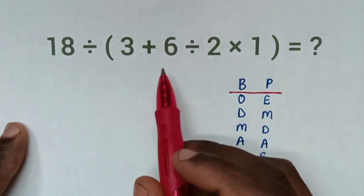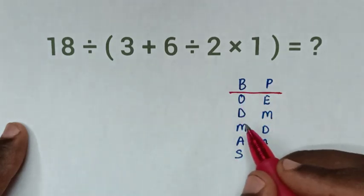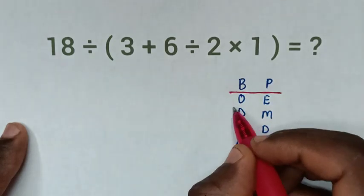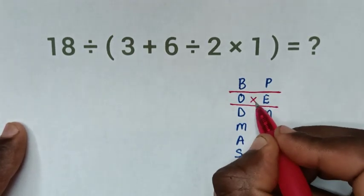Now, from here, inside the bracket, we have addition, division, and multiplication. Then, next in here, order or exponent. We don't have order or exponent.